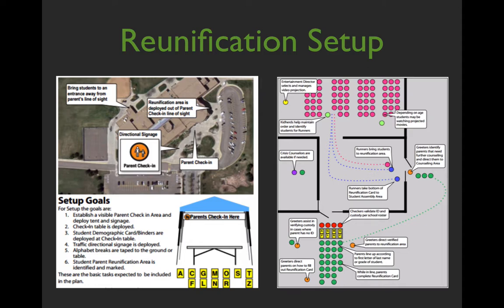The Standard Reunification Method also provides sample maps of what you might want your reunification location to look like. The maps in the book are for explanatory purposes only and won't fit your particular facility, so please modify them. On the left-hand side you'll see a broad overview showing parking, since it's important for students to enter from a different location than parents. On the right-hand side is a more in-depth view — where students will be, whether you have a secluded area for counseling or investigation if needed.